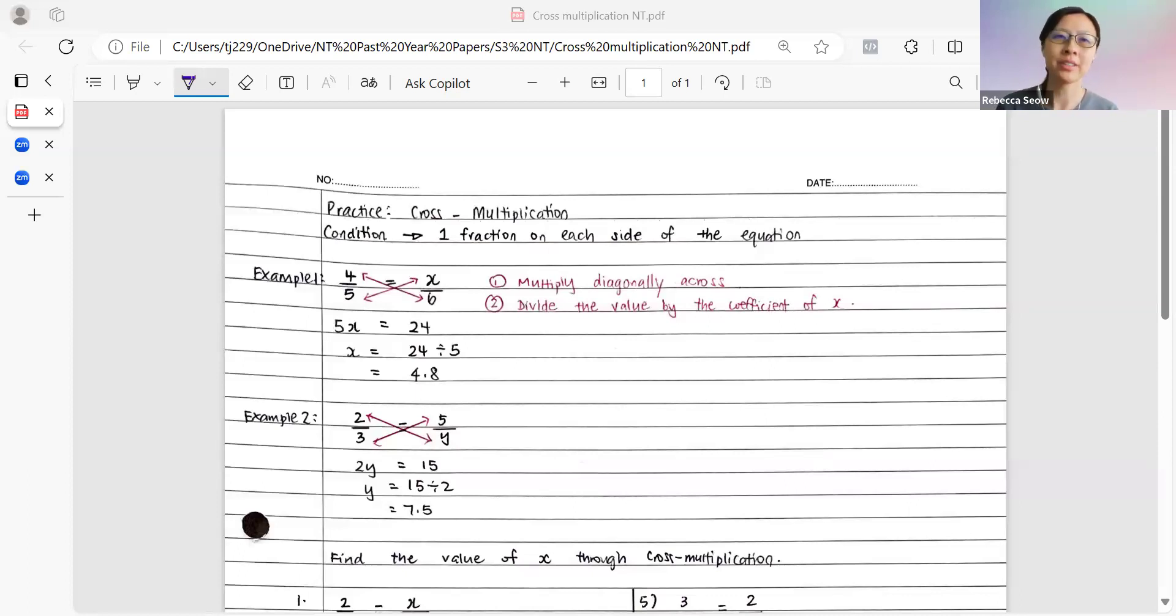And within that one fraction, there was only one numerator and one denominator. In a separate video, I will be also teaching you cross-multiplication with regards to one fraction on each side of the equation, but with more than one term in the numerator or more than one term in the denominator. So let's get started.